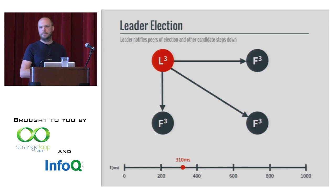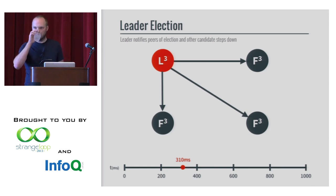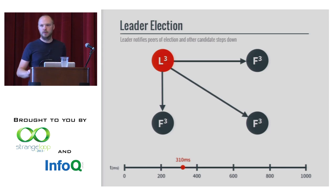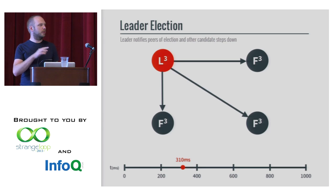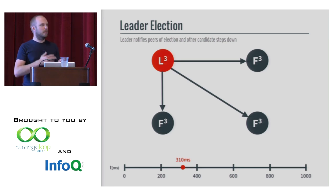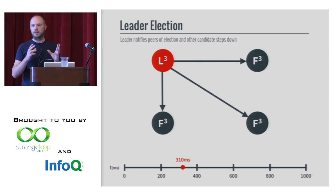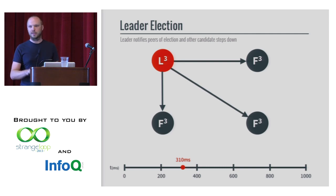Question: are we assuming all nodes are cooperative? Yes — under this system you don't have the Byzantine problem of corrupted messages. You're assuming everyone's working together for the common goal. There are no nefarious nodes. You could add signatures to prove a majority of votes, but the protocol itself assumes cooperative nodes.